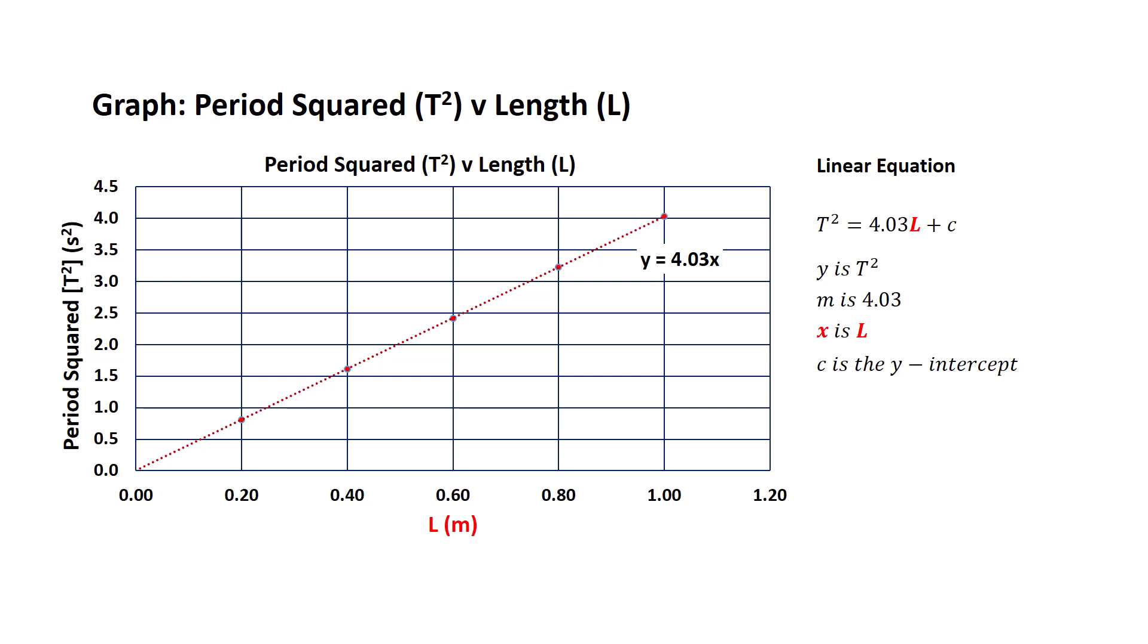Finally, we want to substitute in the value for c, the y-intercept. In this particular graph, we can see that the line of best fit goes through the origin, so the y-intercept is zero. We now have a linear equation using all the correct variables and that is T squared equals 4.03 times L, or the period squared equals 4.03 times the length of the pendulum.